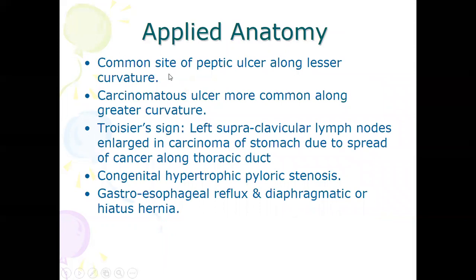For applied anatomy: the common site of peptic ulcer is along the lesser curvature. Cancer-associated ulcers are usually located along the greater curvature. For Troisier's sign, the left supraclavicular lymph node will be enlarged if a person has carcinoma of the stomach, due to the spread of cancer along the thoracic duct.